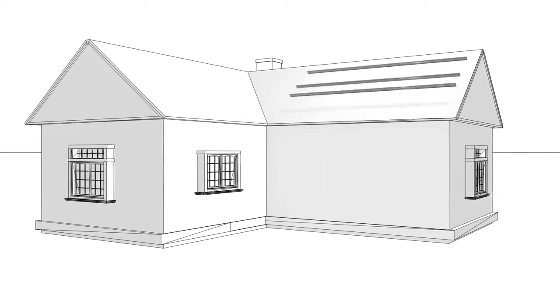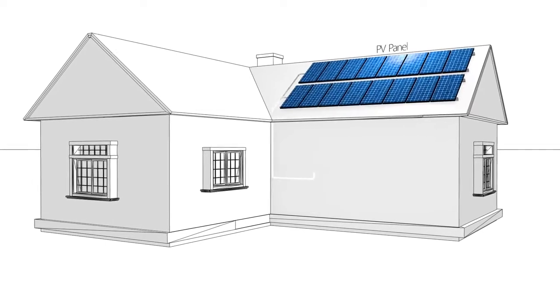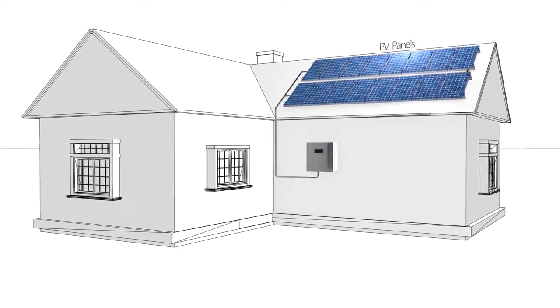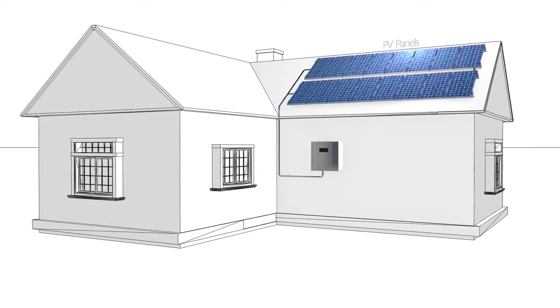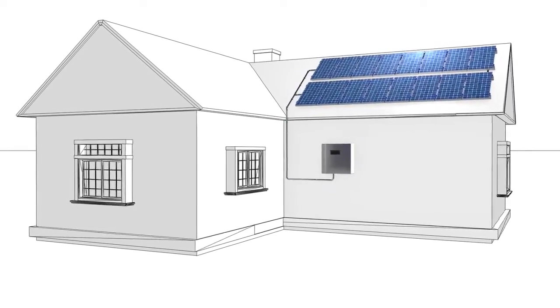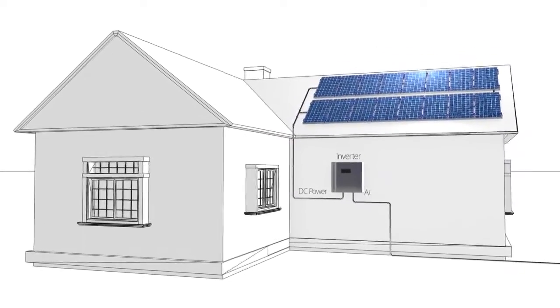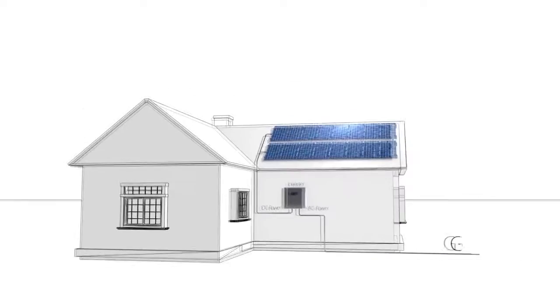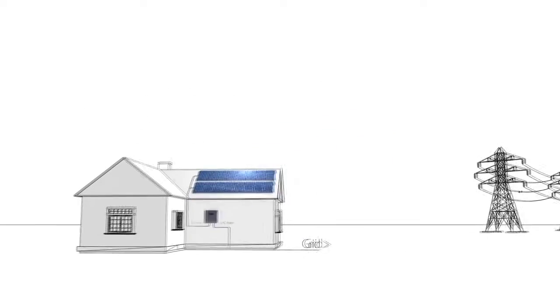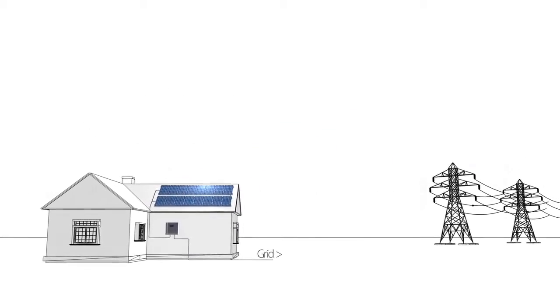A photovoltaic system consists of PV panels, which produce DC power when exposed to sunlight, and an inverter, which inverts the DC power into AC power that is fed into the utility grid.